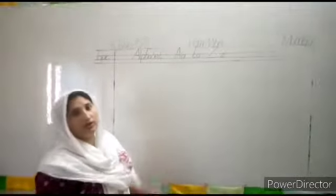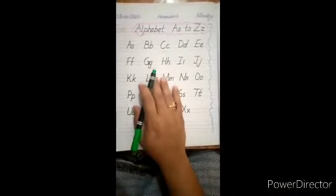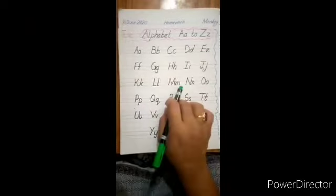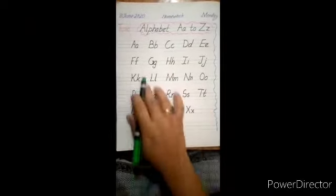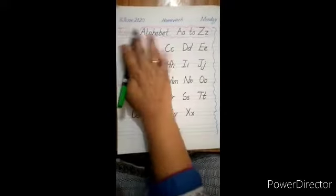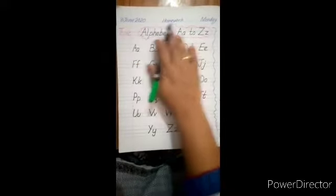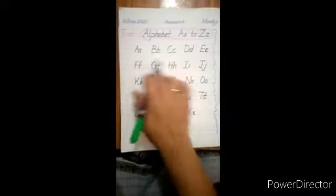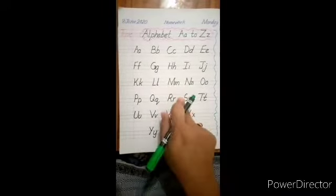Okay students, I have already explained on the board. Today, the topic is alphabet A to Z. The date is 8 June 2020, homework, Monday. Write in the same way in your notebook.